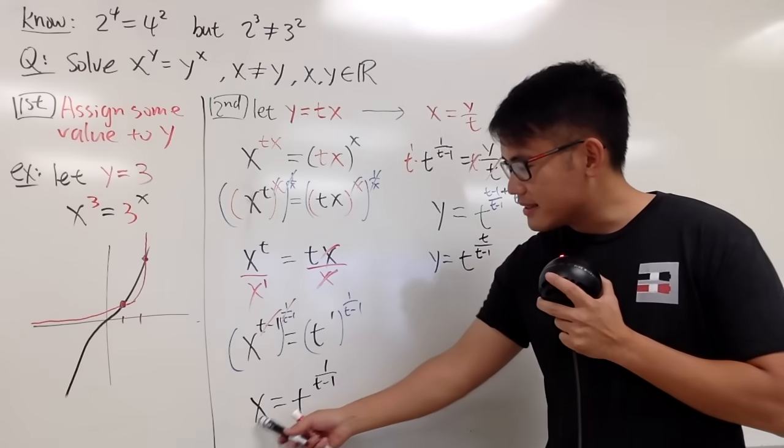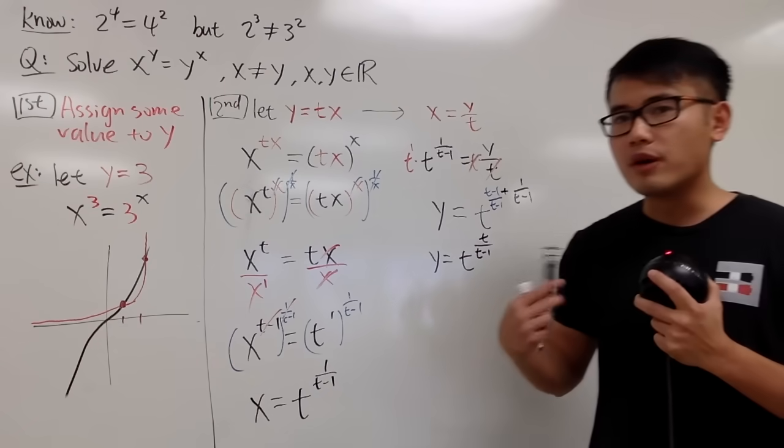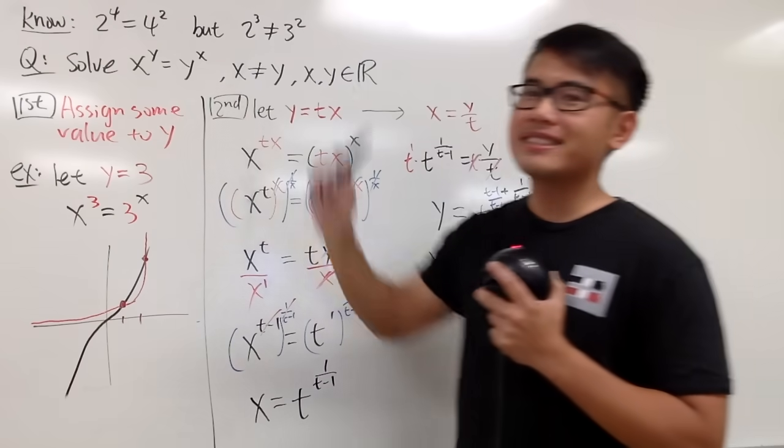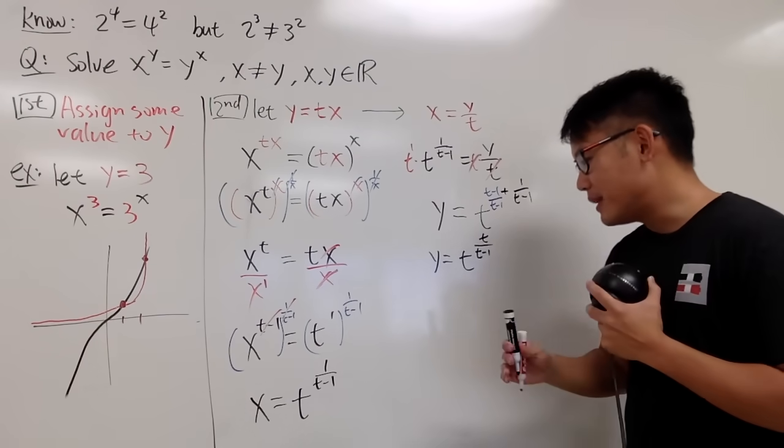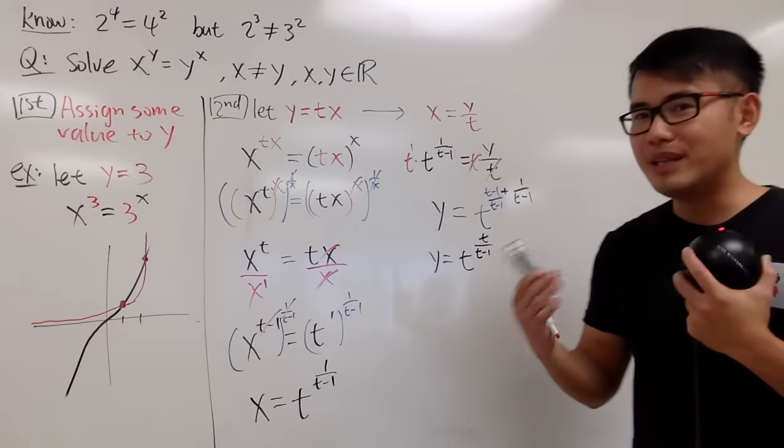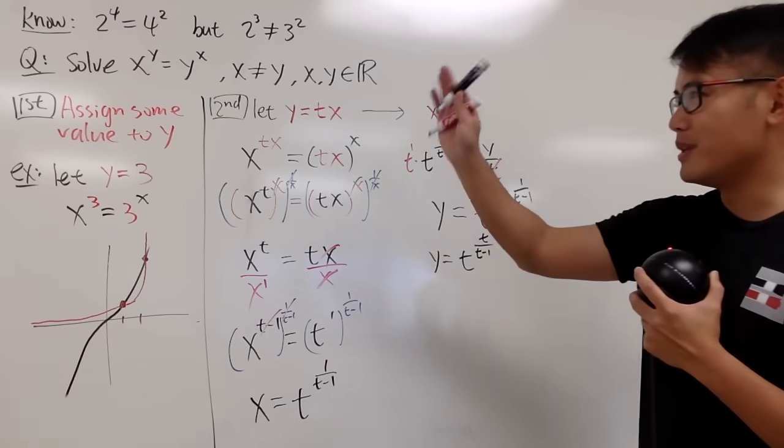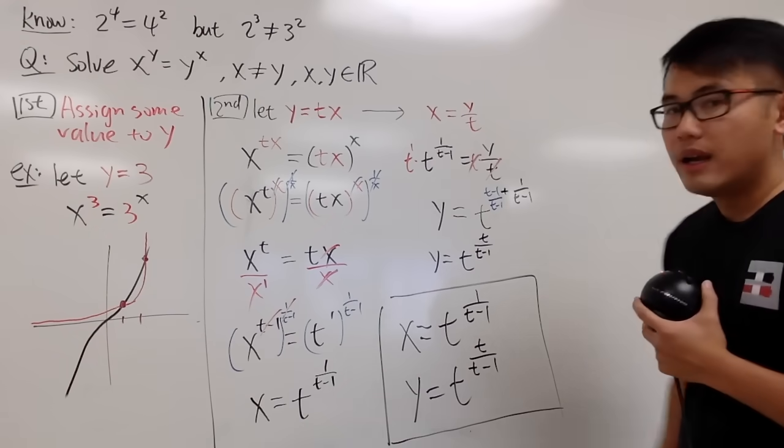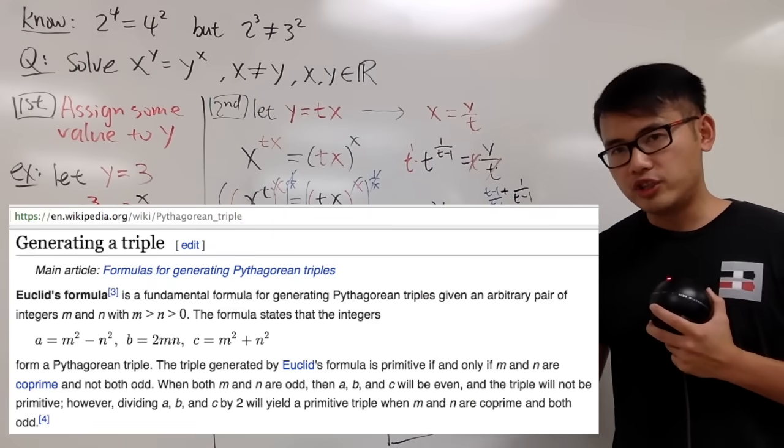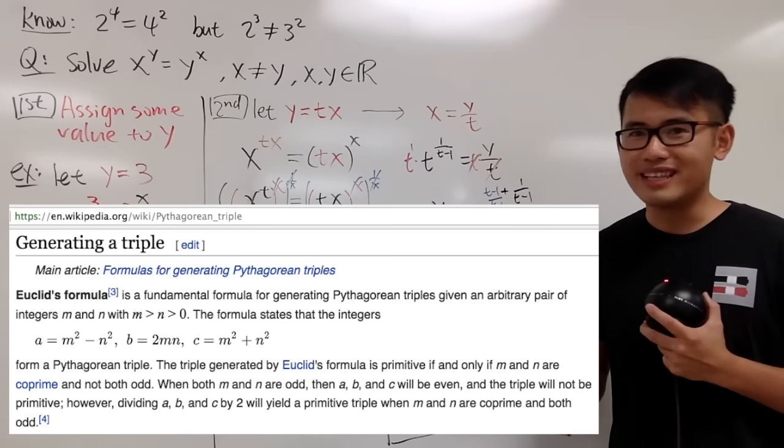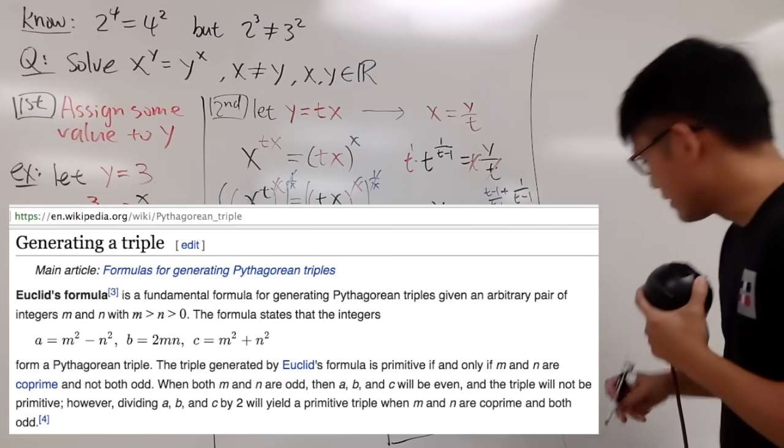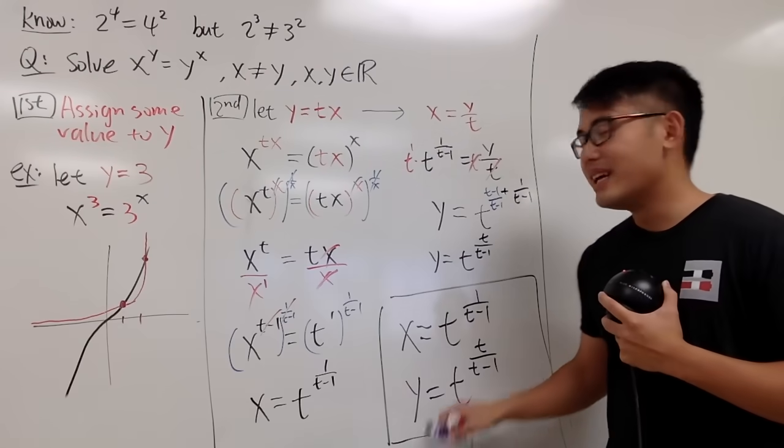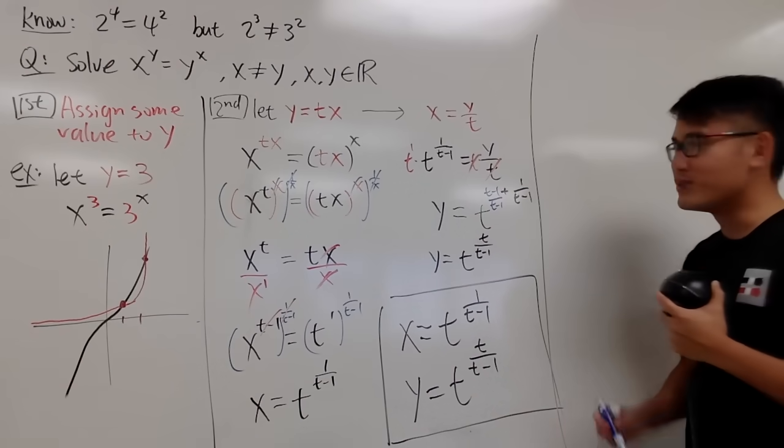So all in all, as long as x is in this form, and y is in this form for some value of t, then you will be able to get x to the y's power that's equal to y to the x power. So just pick some t value and work this out, work that out. You can be able to generate a pair. That's going to be impressive. And let me just write this down for you guys. And this style is really similar to how you can generate the Pythagorean triples as well. So if you haven't seen that approach, you should go check that out. Maybe I will do a video on that later on as well.